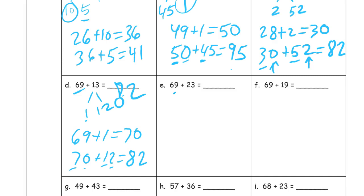And here we have another 9, so I'm looking at this 23, and I want to make it a 1 and a 22. So it's 69 plus 1 is 70. 70 plus the 22, 92.